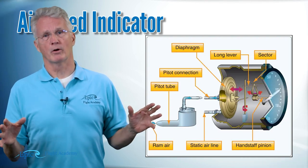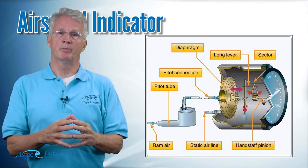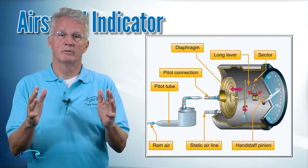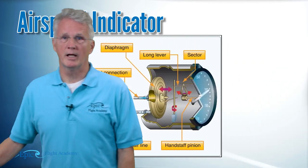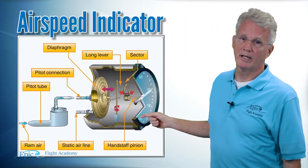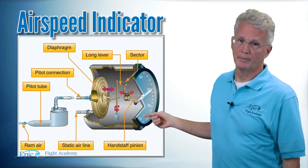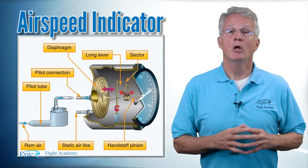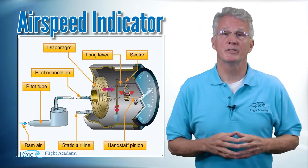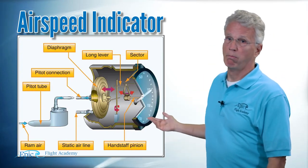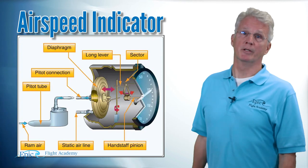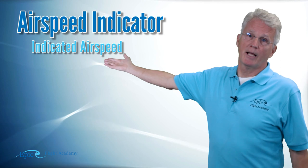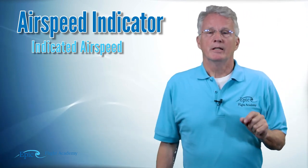So the faster the airplane goes, the more ram air pressure in the tube, the more that diaphragm expands, the more it moves the little indicator and indicates a higher airspeed. Notice how we worded that — it indicates a higher airspeed. What I see on the face of this instrument is the airspeed indicated by the instrument. So what do we call that as pilots? Simple. We call it indicated airspeed.